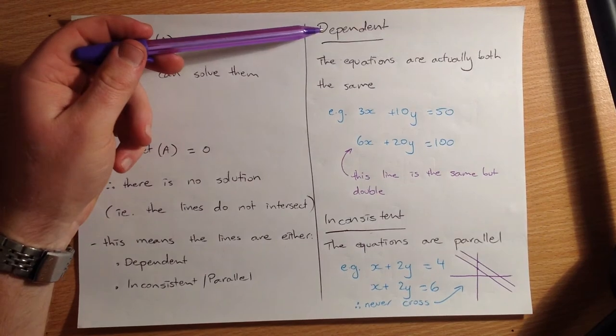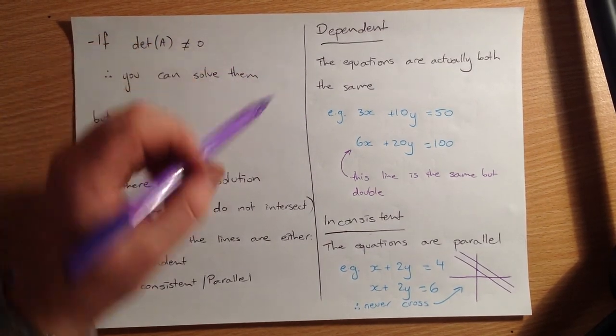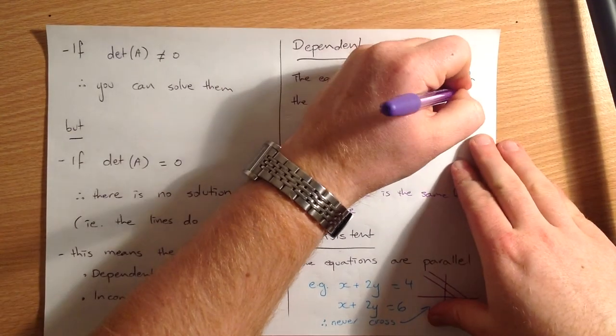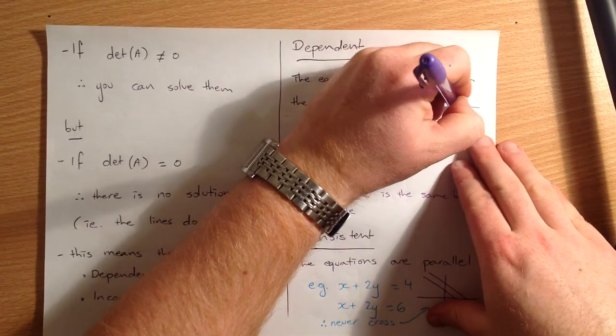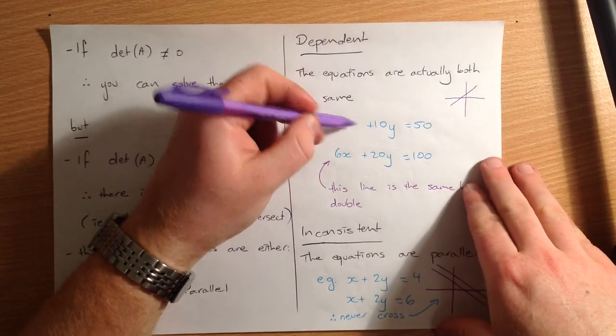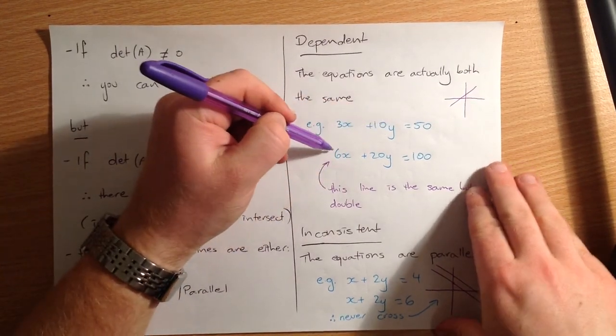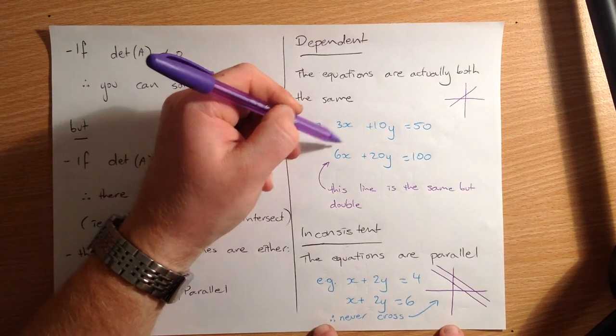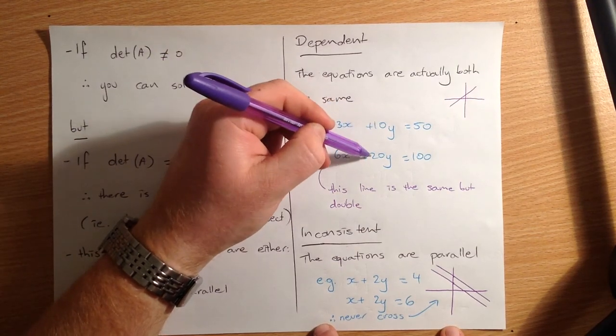So if the lines are dependent, they're actually both the same line. So in terms of a graph, let me just draw that for you. You've actually just got like one line, and then that might be 3x plus 10y equals 50. You can see here we've just doubled everything. So 3 times 2 is 6x.